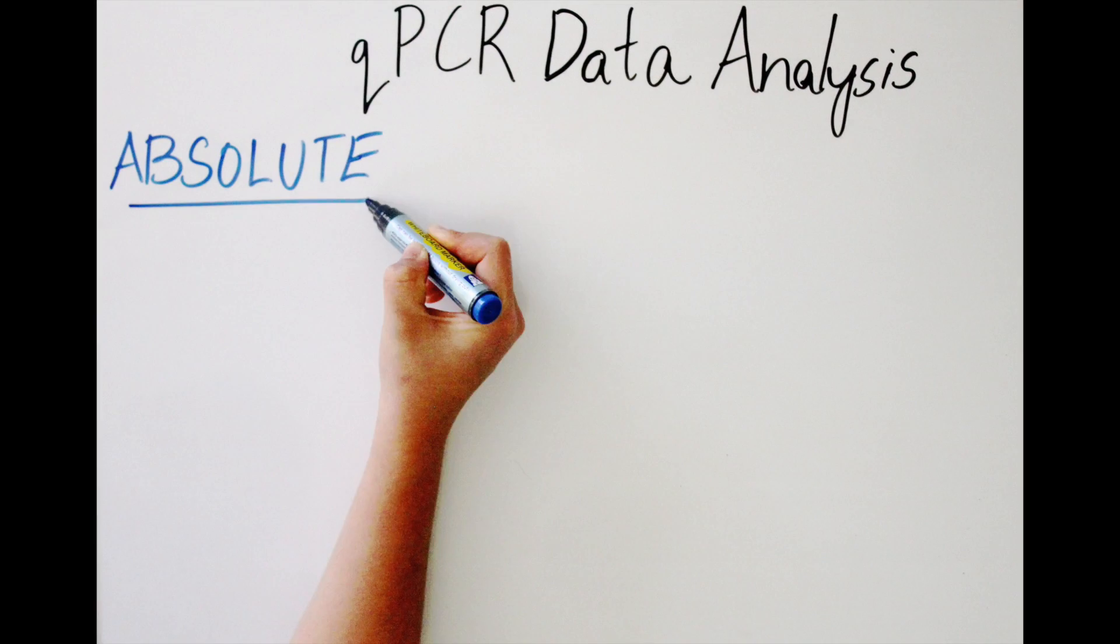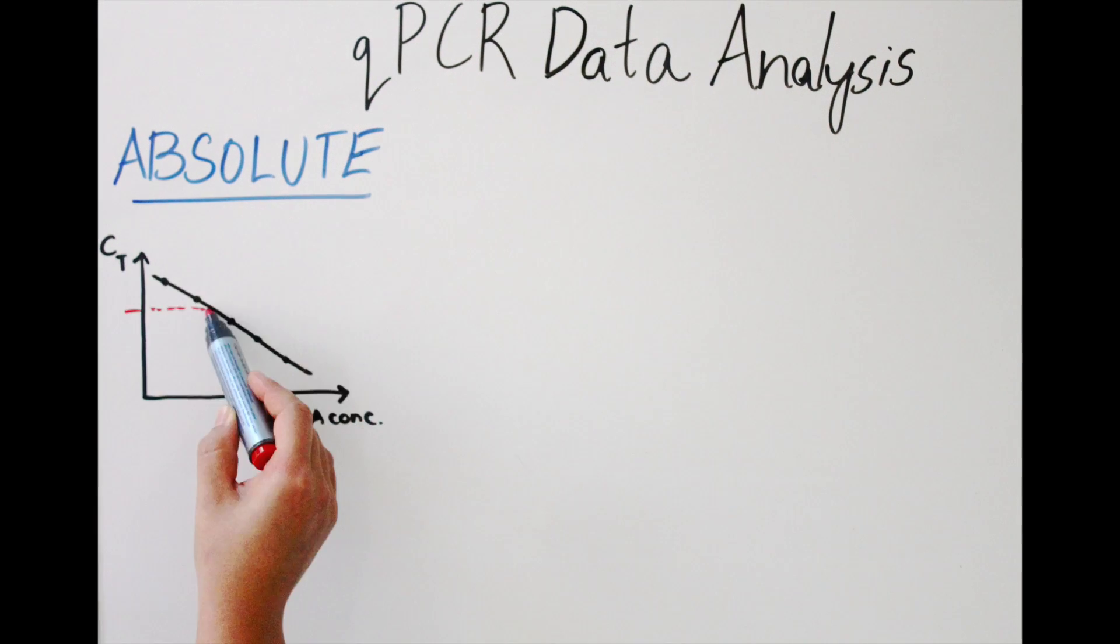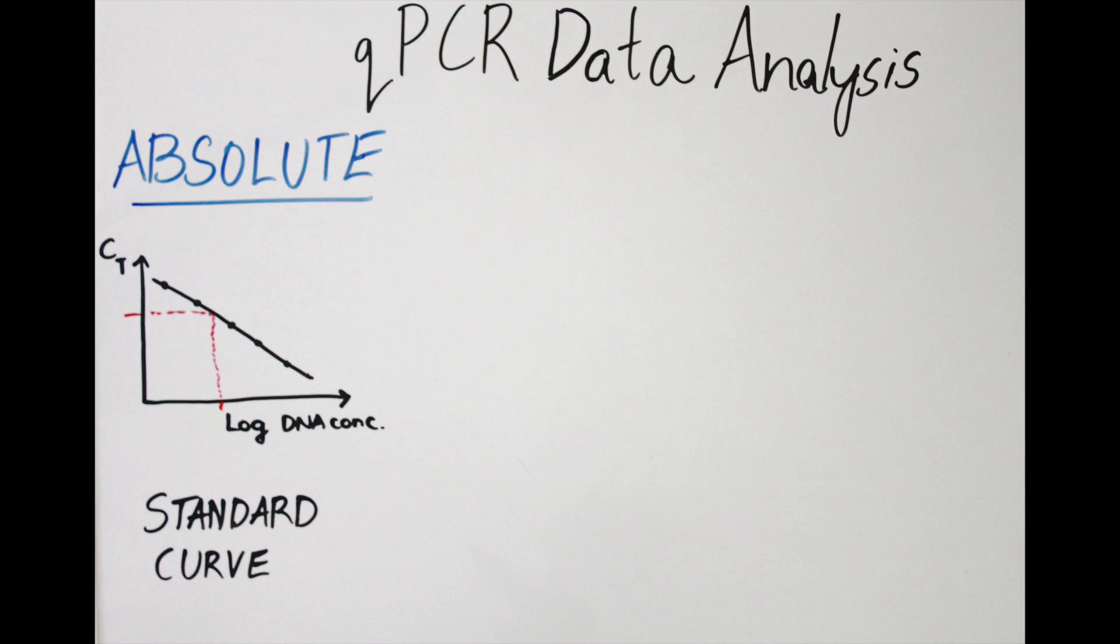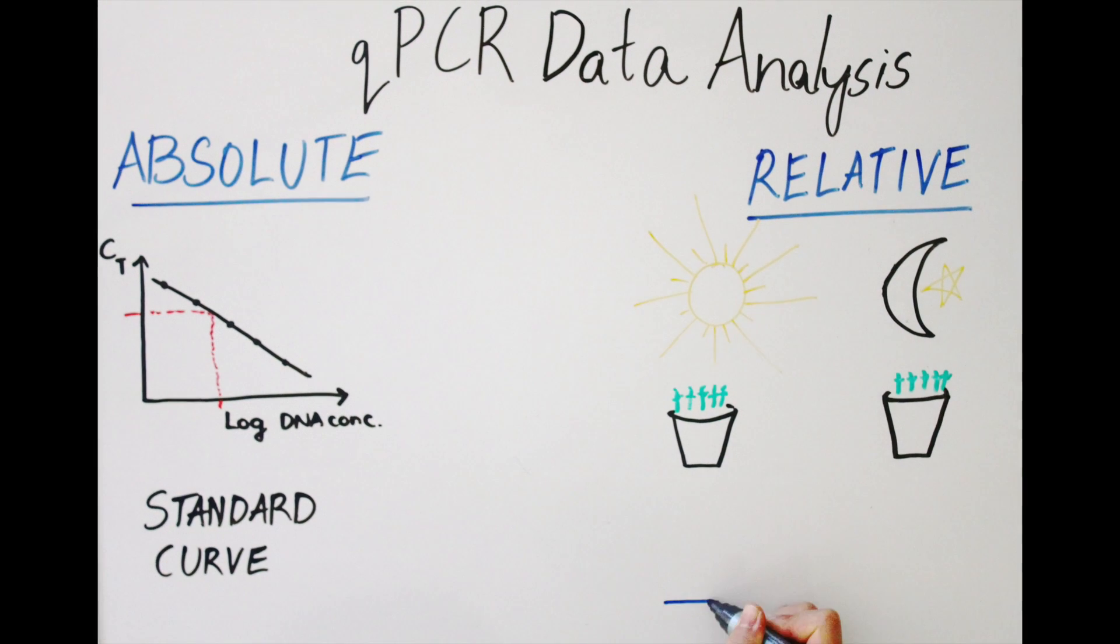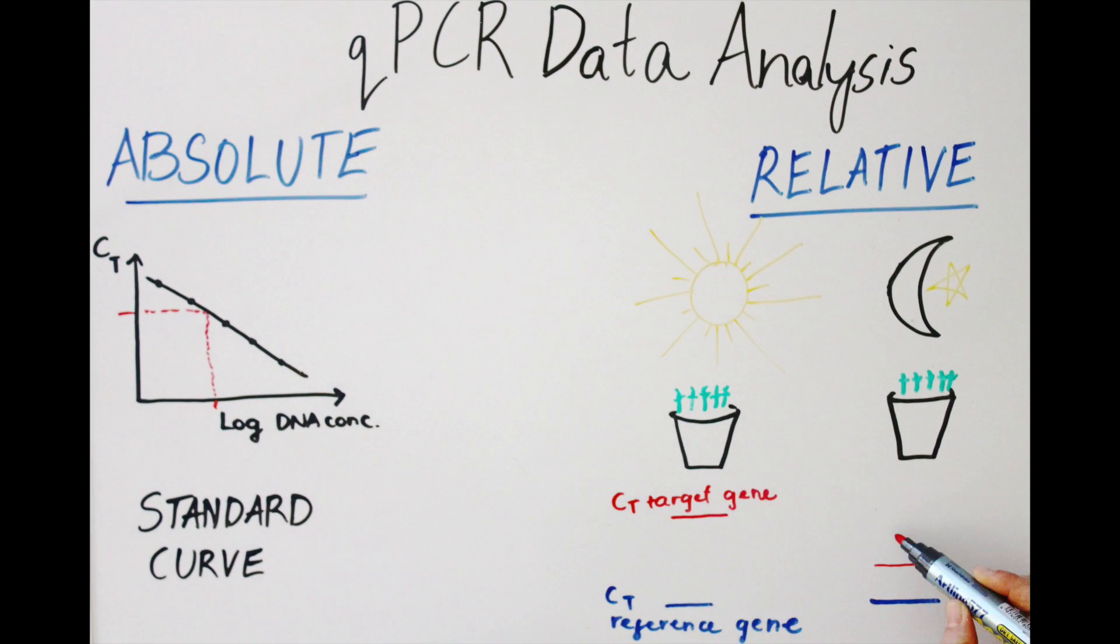But how do you analyze qPCR data? You can either use absolute quantification using a standard curve to quantify a sample from one treatment, or relative quantification using one or more reference genes to standardize and compare the CT values between two treatments.